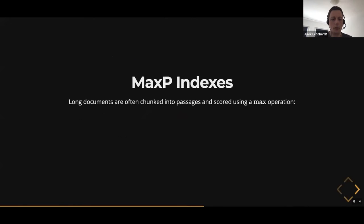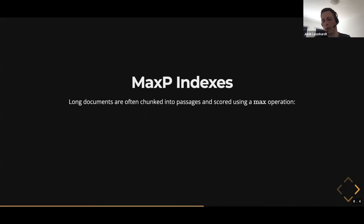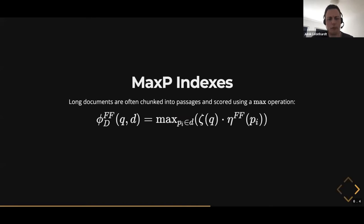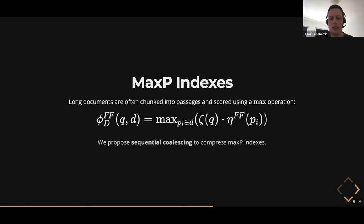For the first technique, I need to introduce the concept of max-p indexes. The idea is simple: you have long documents, and what people usually do is chunk these long documents into multiple passages, so one document ends up having multiple vector representations. To compute the score for a document, you compute the scores for every passage of that document and take the maximum. Our intuition is that there's probably a lot of redundancy if you do it this way — if a document has many representations, the chances are high that some are unnecessary.